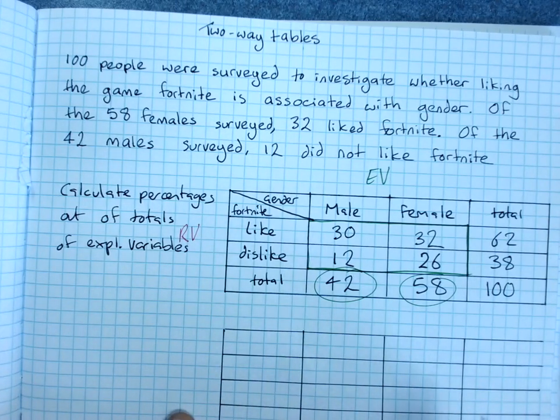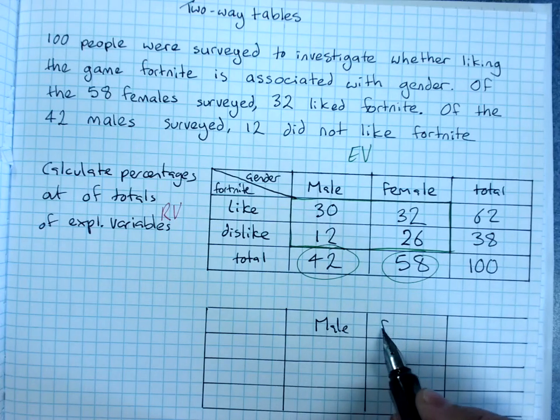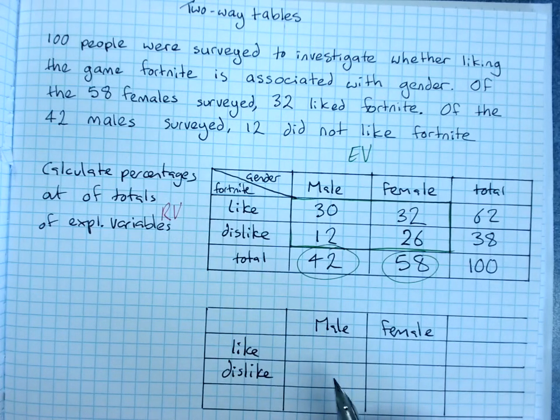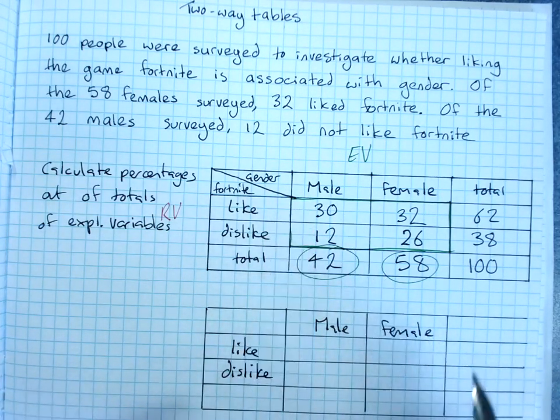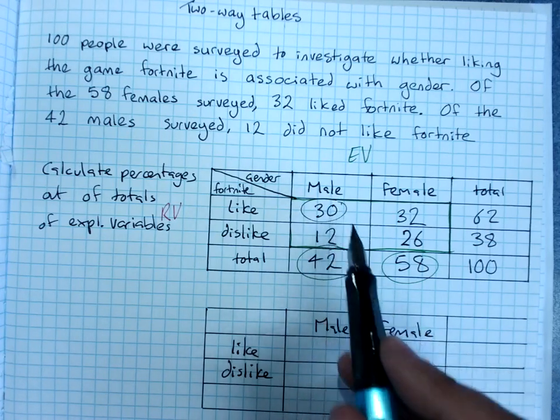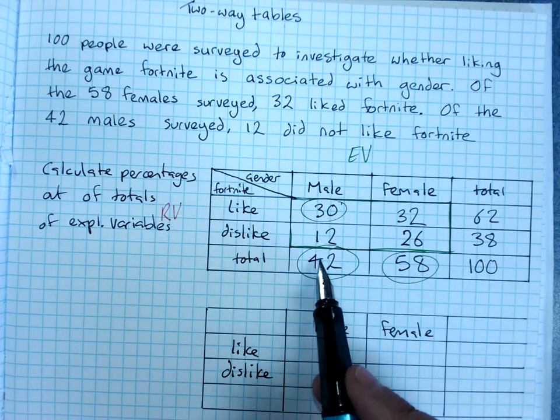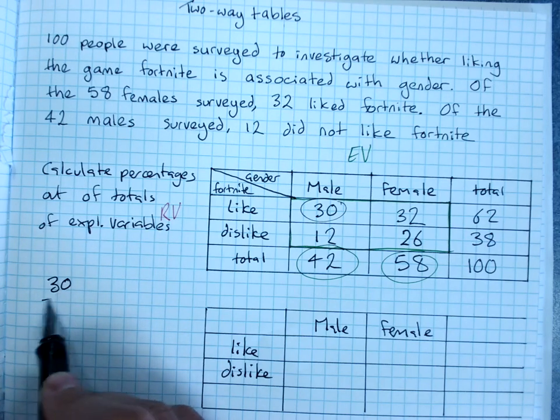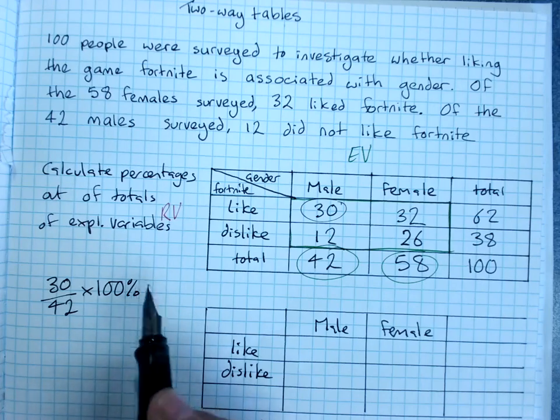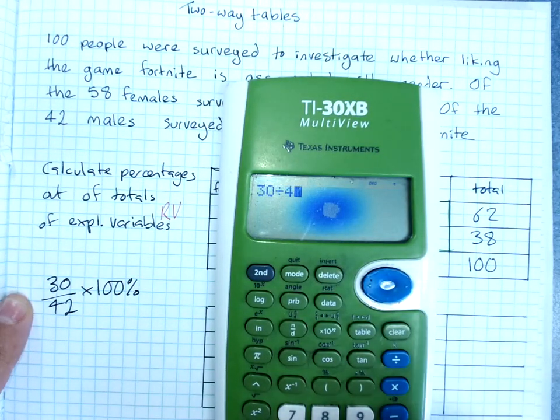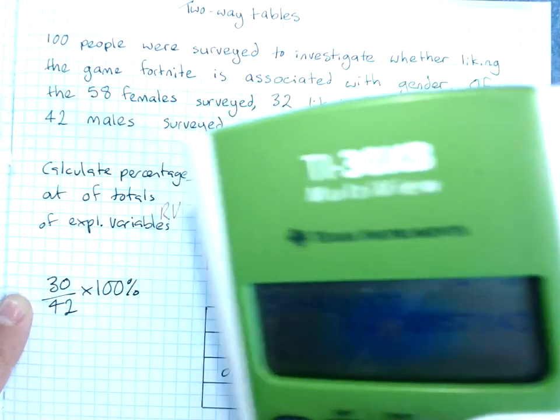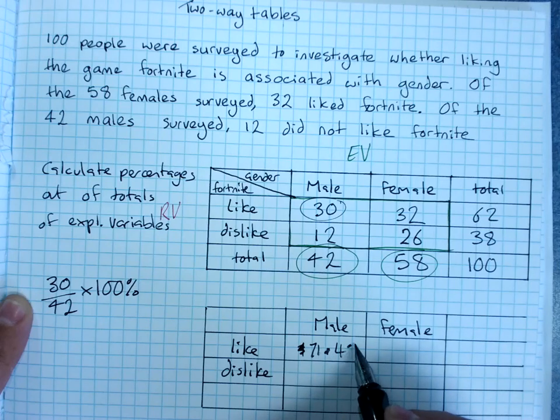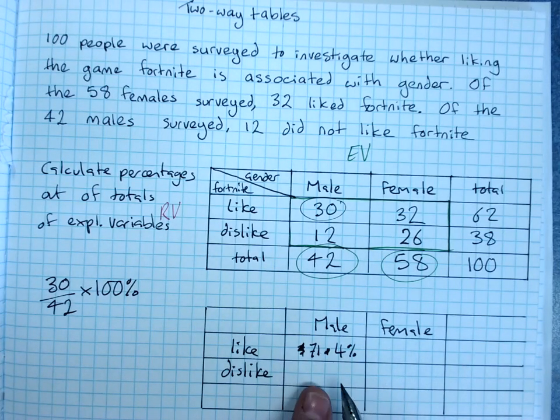So that means we're still going to have the same setup with our table. Male, female, like and dislike. It's just that we'll be looking at what percentage of males liked Fortnite and disliked Fortnite. So to do that, of course, it's the number of males out of the total number of males, the number of males who liked it out of the total number of males times 100. So we don't actually have to do working. I'm just going to show you how we'd calculate it. 30 divided by 42 times 100, 71.4% of males liked Fortnite.